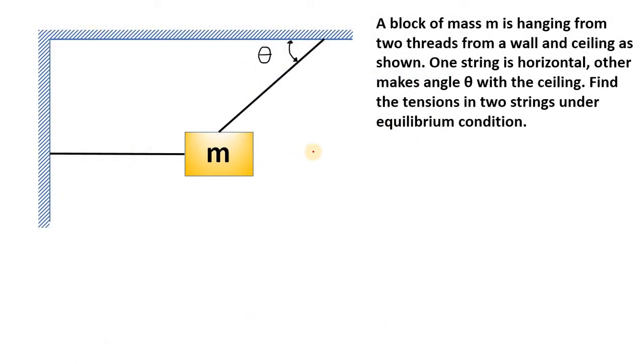In this question, a block of mass M is hanging from two threads from a wall and ceiling as shown. One string is horizontal, you can see this one, this string is horizontal and the other is making angle theta with the ceiling. Find the tension in the two strings under equilibrium condition.